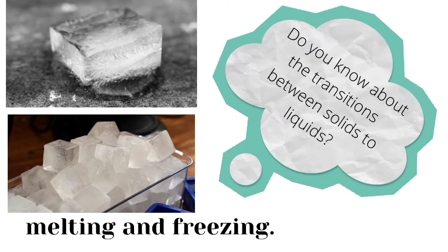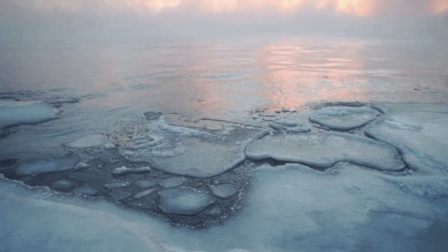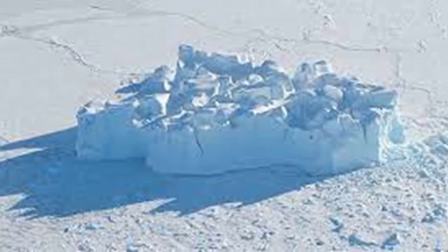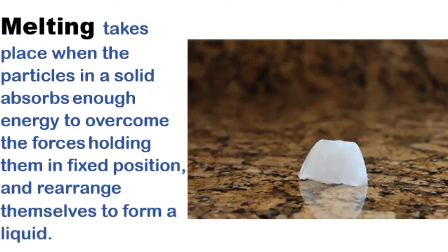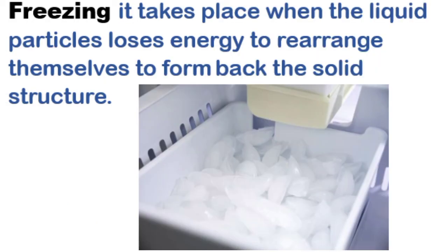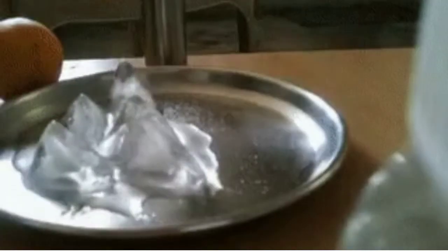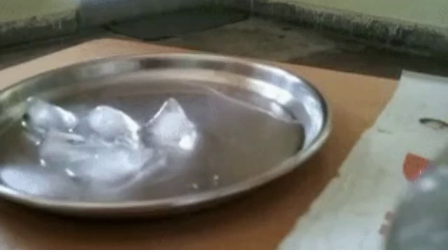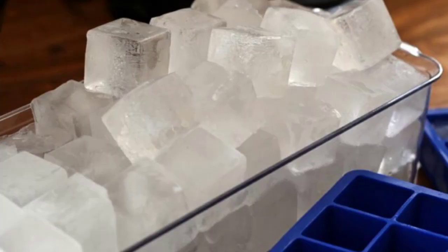The transitions between solids and liquids are melting and freezing. Think of Arctic sea ice: in summer, warmer air temperatures cause more heat energy to be absorbed by the ice, breaking bonds between water molecules so the ice melts and becomes liquid water. In winter, colder temperatures cause sea water to freeze and ice to form again. Melting occurs when particles in a solid absorb enough energy to overcome the forces holding them in fixed position and rearrange to form a liquid, while freezing occurs when liquid particles lose energy and rearrange to form a solid.